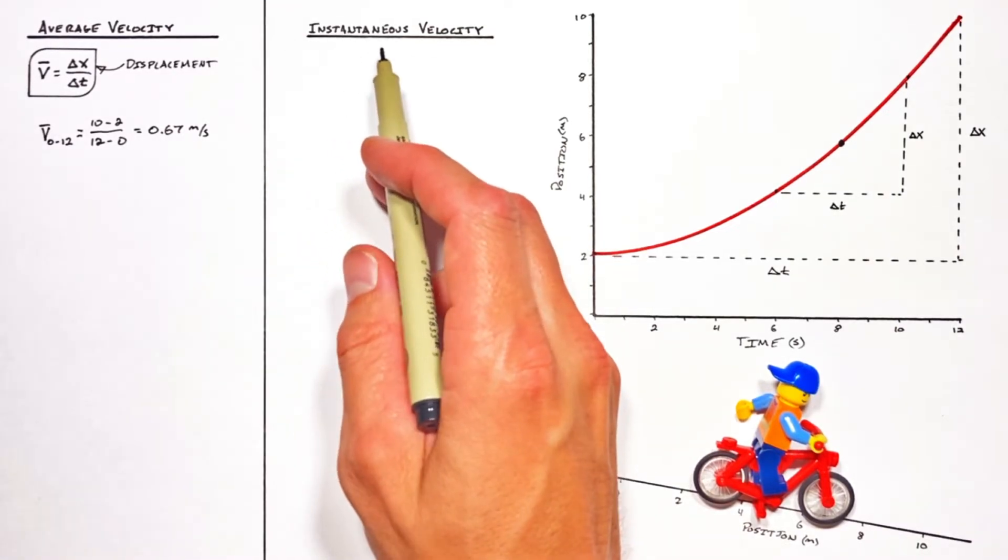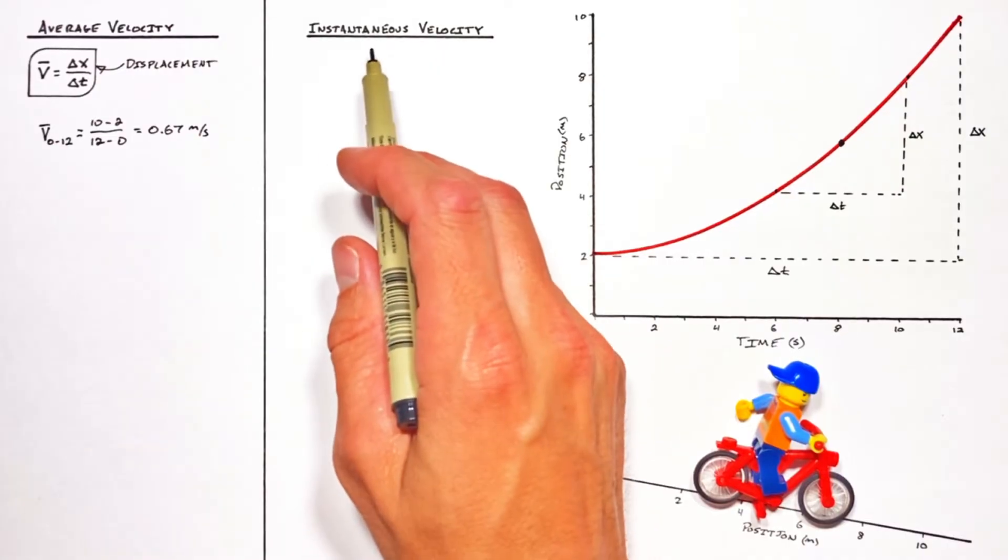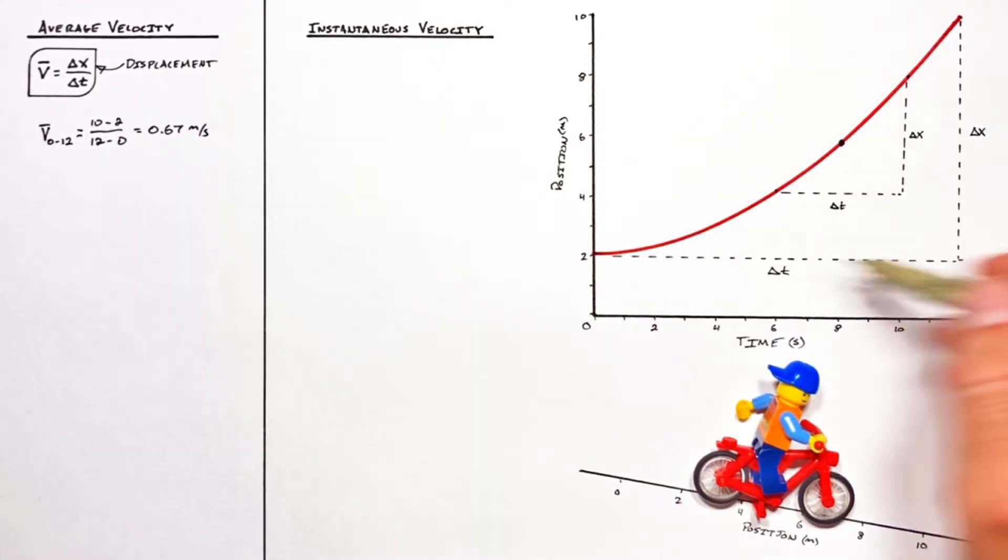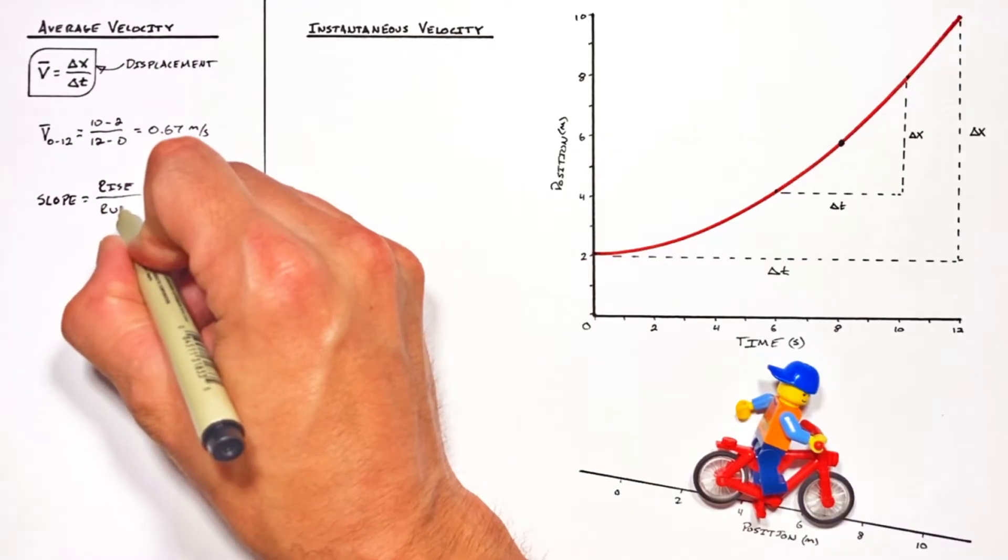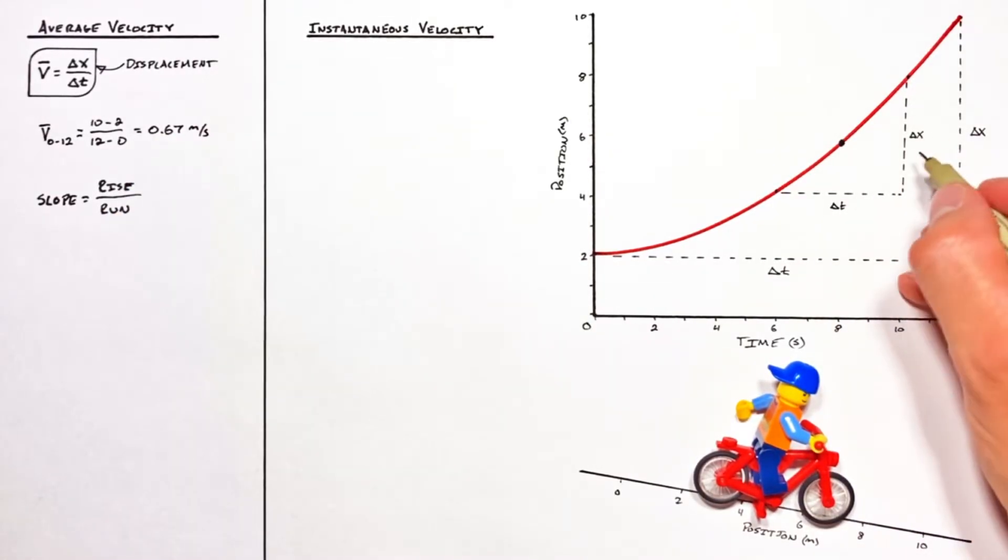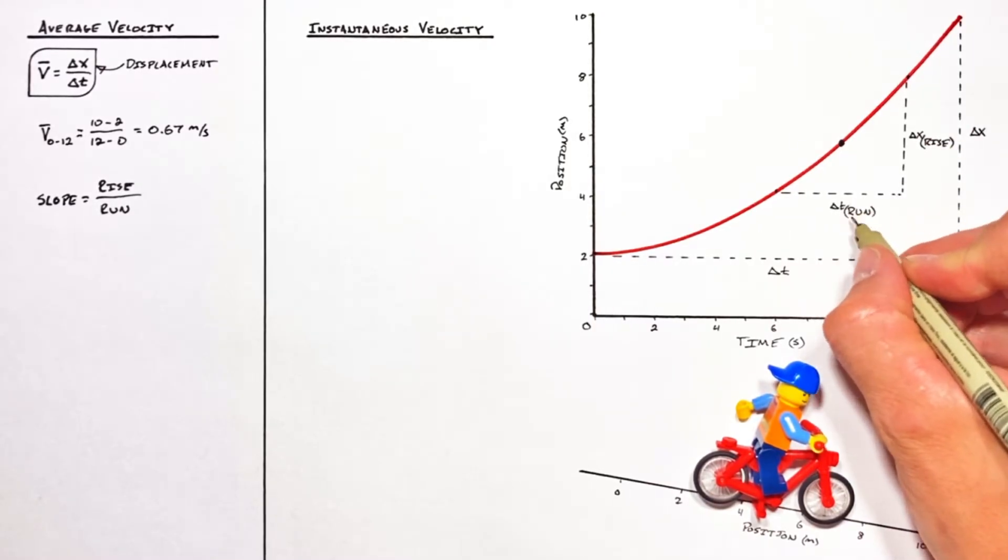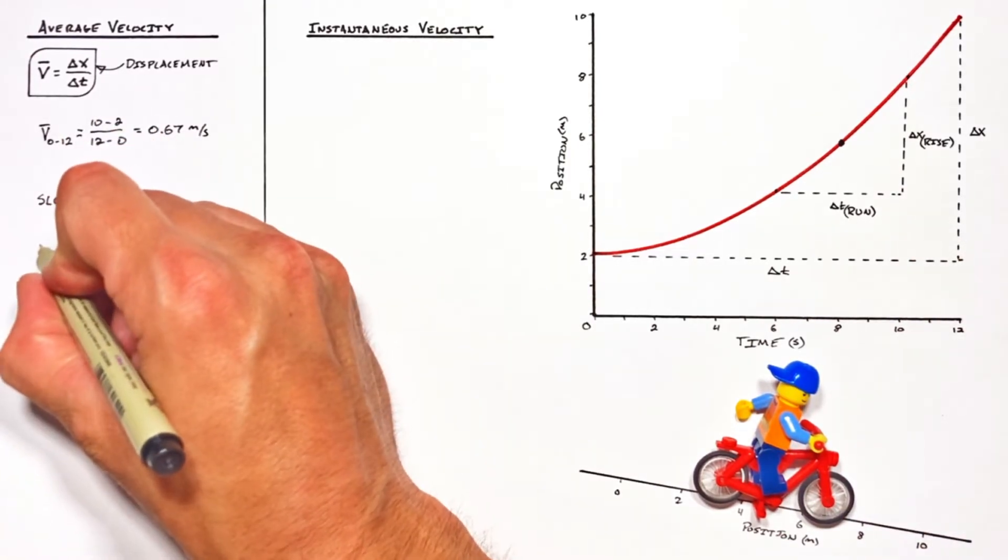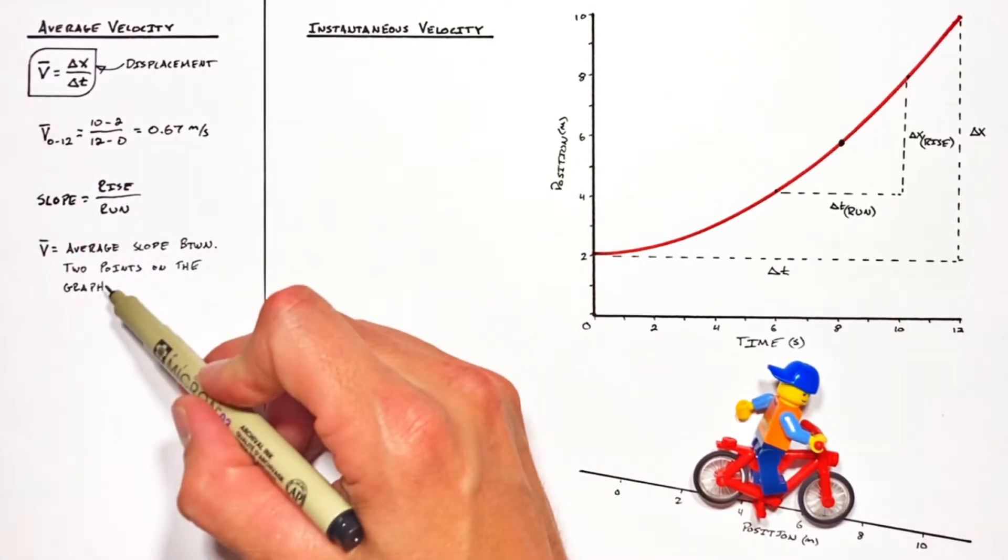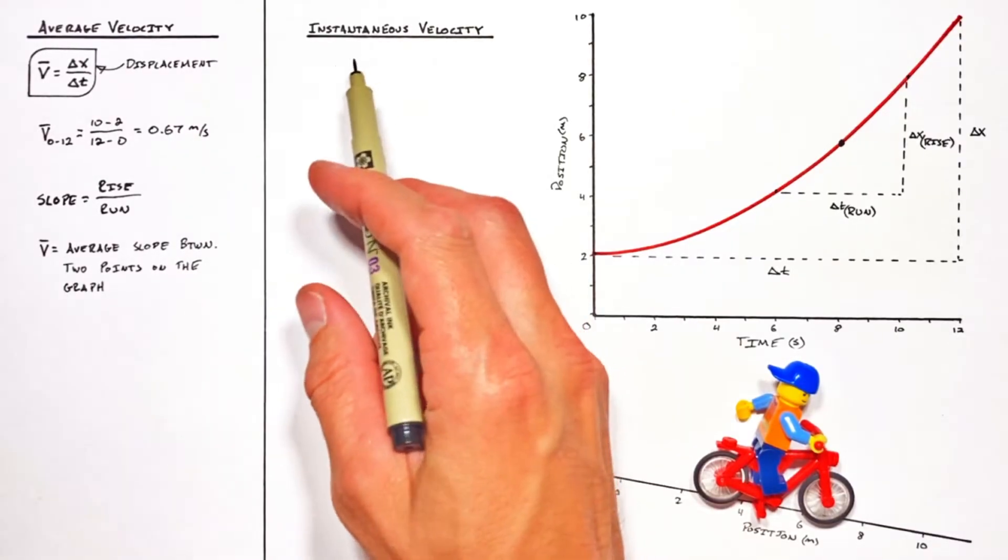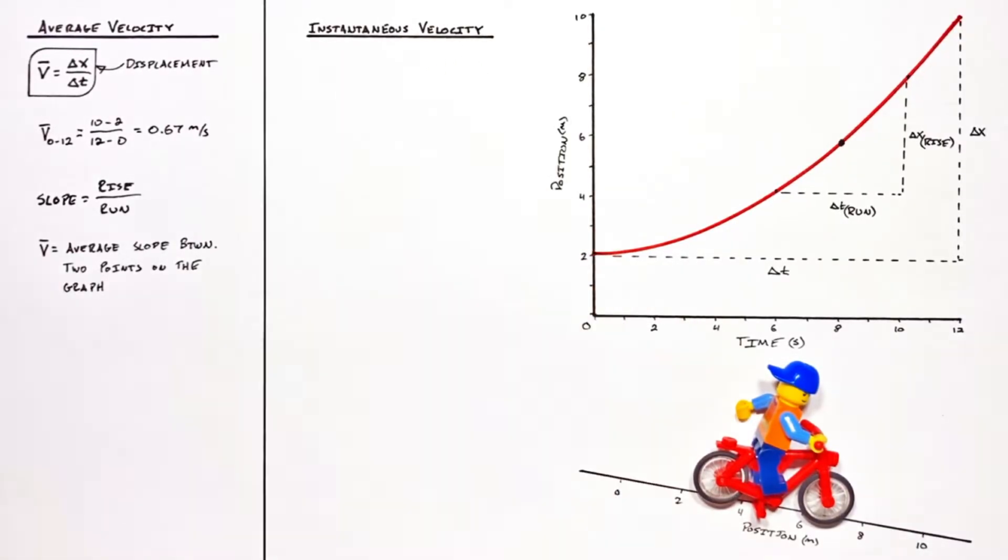And that's where instantaneous velocity comes in. Now the relationship between average velocity and instantaneous velocity is best explained if we're to look at what we've done so far not through the lens of physics or science, but through the lens of math. You see slope is given by rise over run. And any time that we're solving for average velocity, we're really just working out the rise over the run. You could even go so far as to say that average velocity is the average slope between two points on a graph.